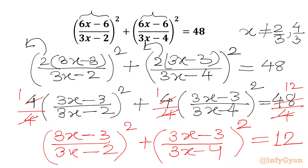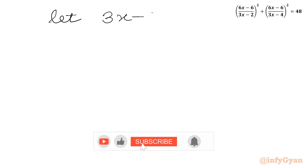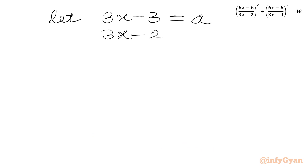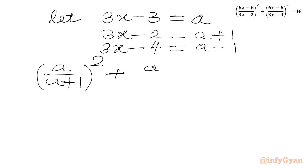Now we will use substitution. Let's say 3x minus 3 equals a. So 3x minus 2 will be a plus 1, and 3x minus 4 will be a minus 1. So we can write our equation as (a over a+1) whole squared plus (a over a-1) whole squared equal to 12.